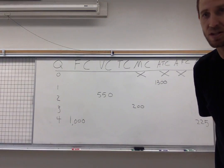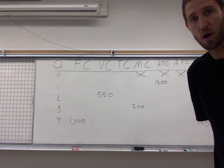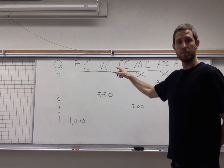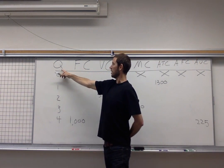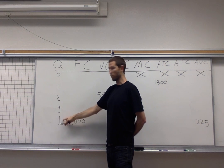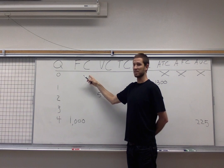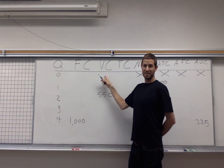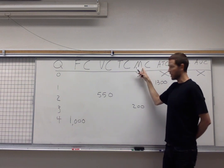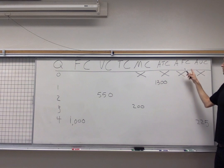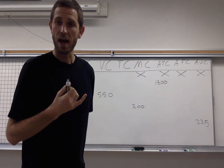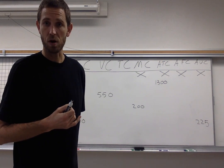Take a look at the board here behind me. I've set up a table where we can introduce all the costs that a firm might have. Starting on this end, we have the quantity the firm is going to produce — zero, one, two, three, or four units. FC represents fixed costs. VC stands for variable cost. TC represents total cost. MC is for marginal cost. And then finally the per-unit costs: average total cost (ATC), average fixed cost (AFC), and average variable cost (AVC).